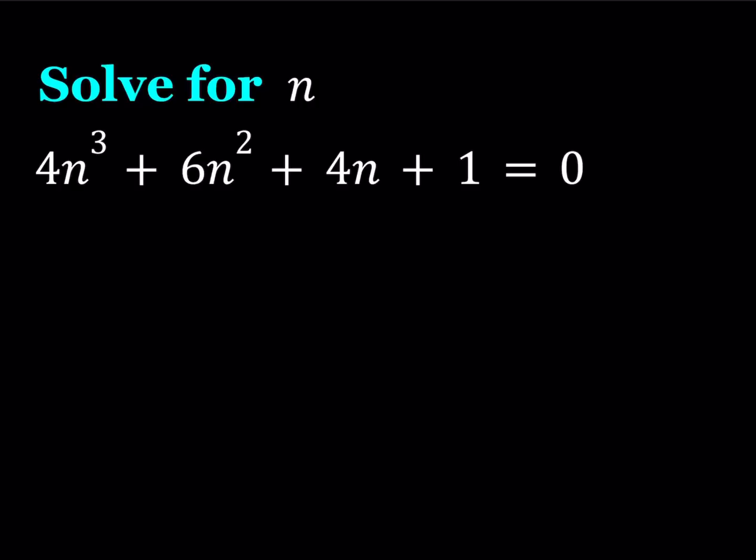So we have 4n³ + 6n² + 4n + 1 = 0. We're going to be solving this cubic equation. We're not going to use the cubic formula, that would be the third method, because I'll be presenting two methods here.